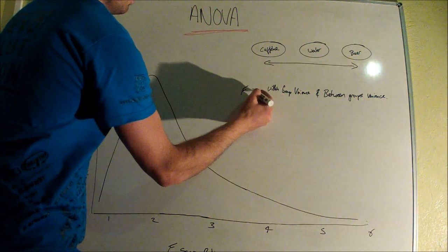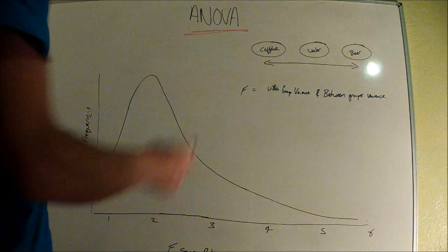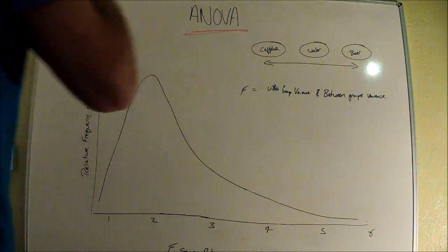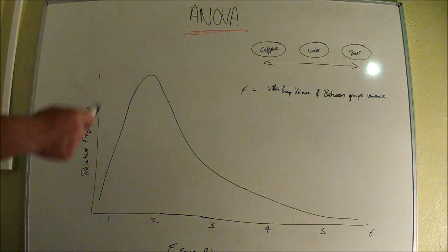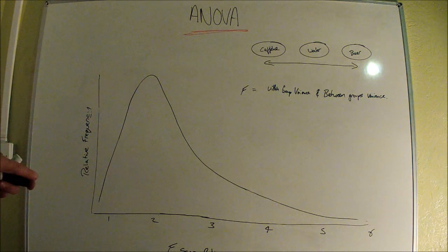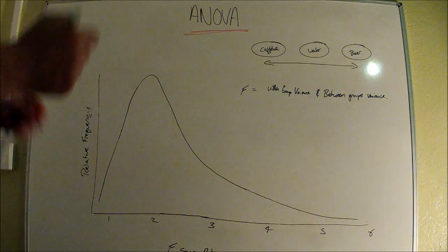Once we've calculated this F score, which we're going to look at in the next few podcasts, you can determine whether you accept or reject your null hypothesis depending on where that F score falls on the F ratio.